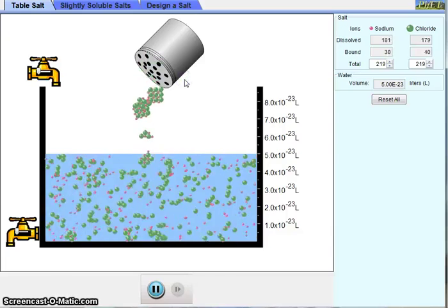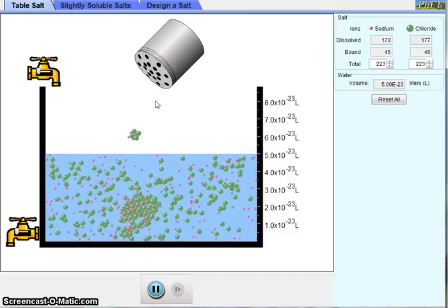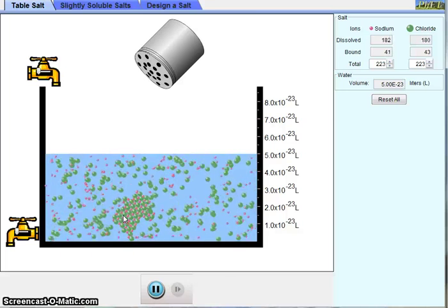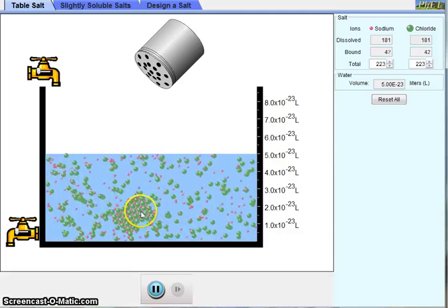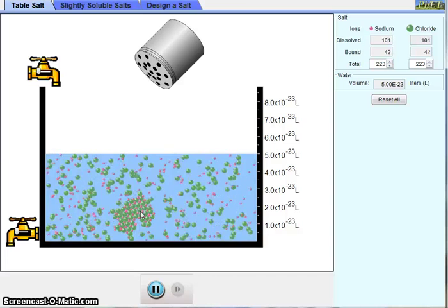Now what we're seeing is a large salt crystal forming right here. This is different from salt in the dissolved state because now there are ionic bonds forming between the positive sodium ions and the negative chloride ions.